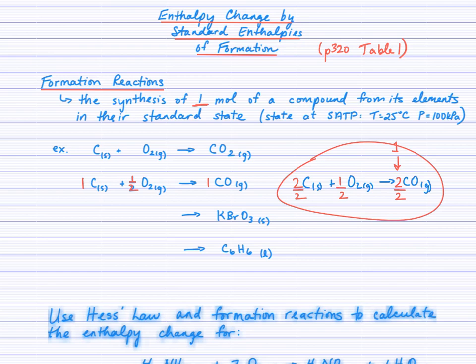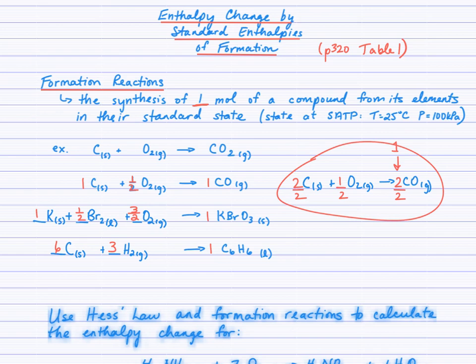Go ahead and try to write formation equations for potassium bromate and benzene. For potassium bromate, you should see the coefficients 1 K, one half Br₂ liquid, and three halves O₂ gas. If you had trouble with that one, just balance the equation as you normally would and then check the coefficient in front of the potassium bromate — if it's not 1, divide by itself.